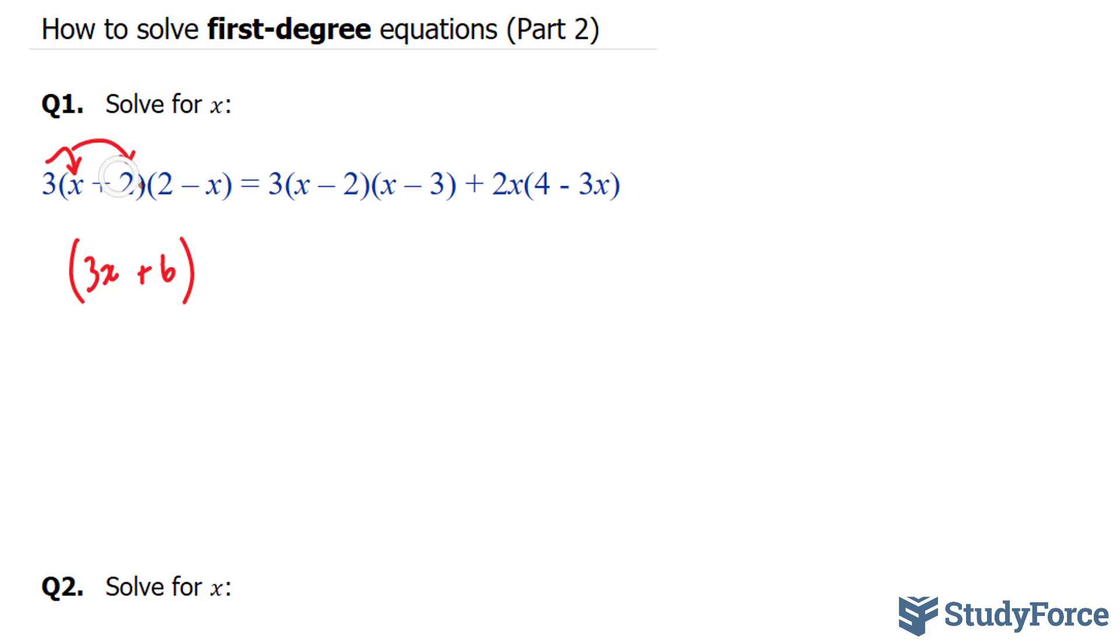The reason why is because there is this adjacent bracket that hasn't been multiplied yet. Similarly, we have to do the same thing with this 3. We multiply this 3 by this x, and by that minus 2, and we end up with 3x minus 6 in brackets, and then this part, x minus 3, right beside it.